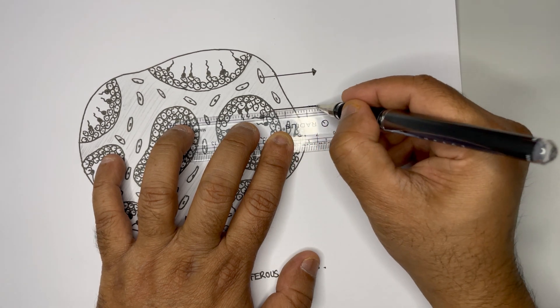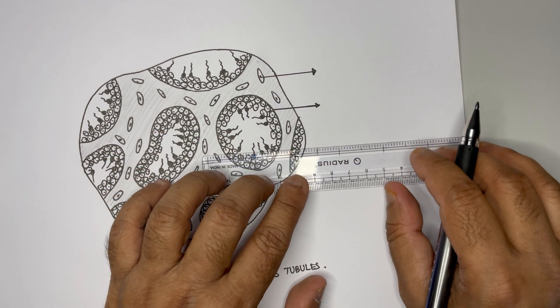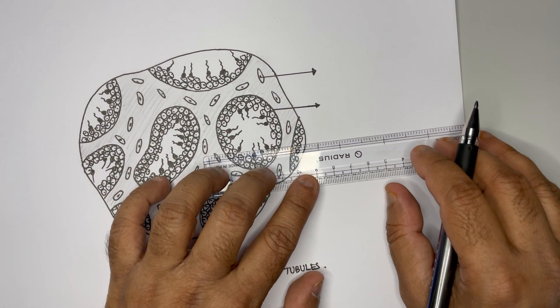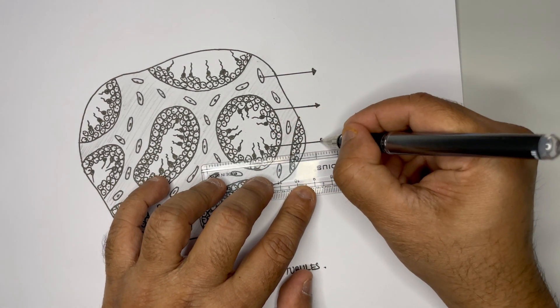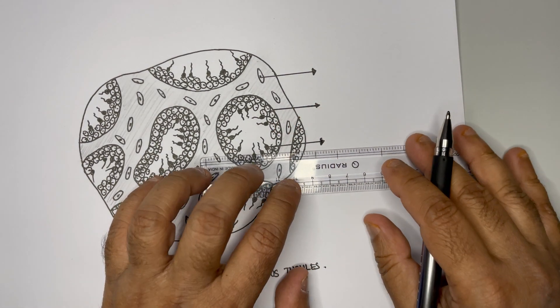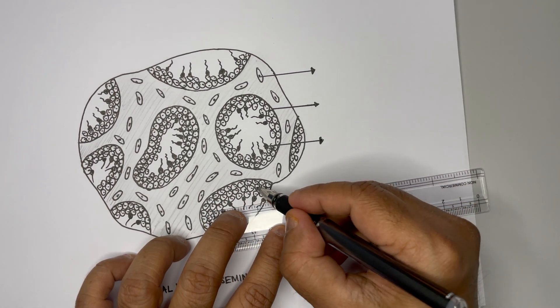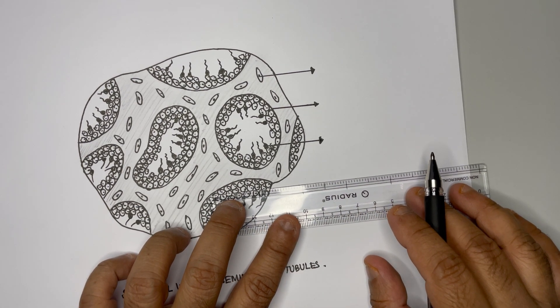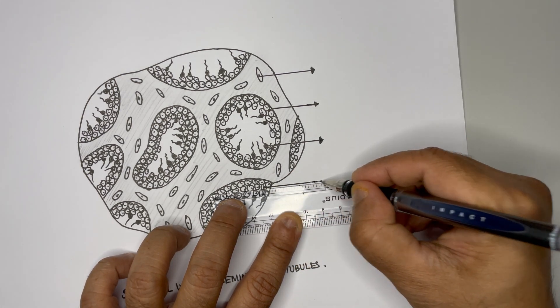That we can mark as seminiferous tubule, and this black one with the tail is the spermatozoa. So let us mark one among those spermatozoa here. And some of the cells inside, like you can just select one or two cells like this and just mark the mass set only cells.